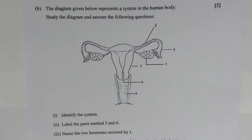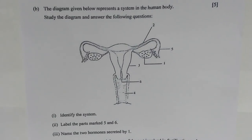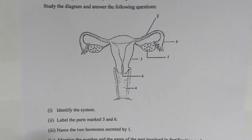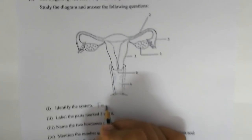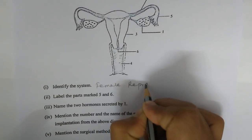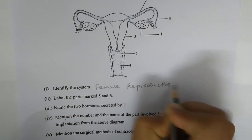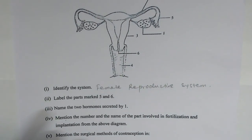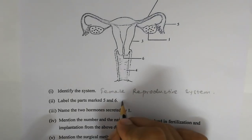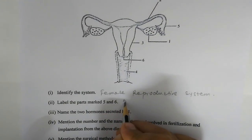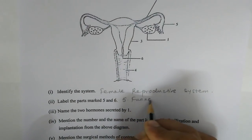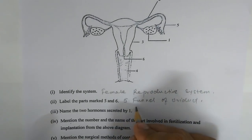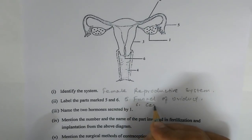Question 7b: The diagram represents a system in the human body. Number one — identify the system. It is the female reproductive system. Number two — label parts marked 5 and 6. Part 5 is the funnel of the oviduct and part 6 is the cervix.